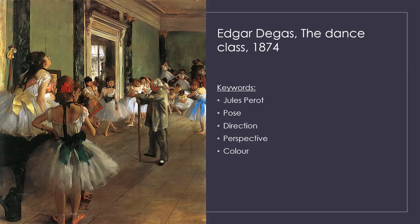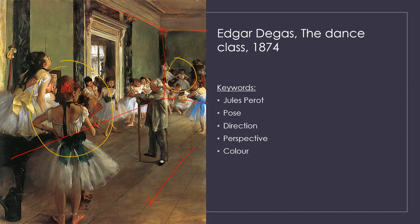The room has a receding linear perspective — that's a key term to note — and this is emphasized by the lines on the parquet floor. We can see the room goes into the background, and this is further heightened by the diminishing figures. Larger figures appear in the foreground and smaller figures recede into the background, giving a strong sense of depth.